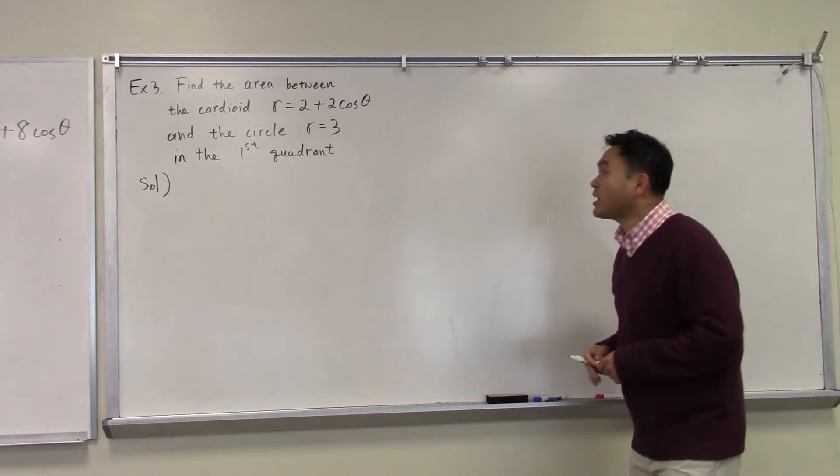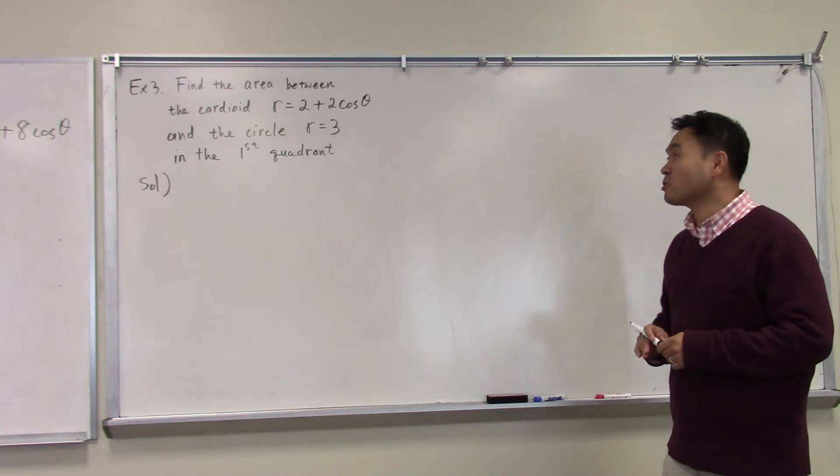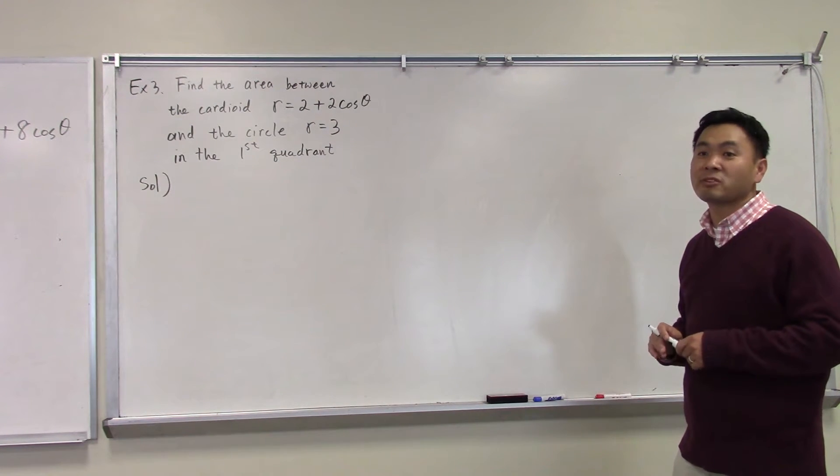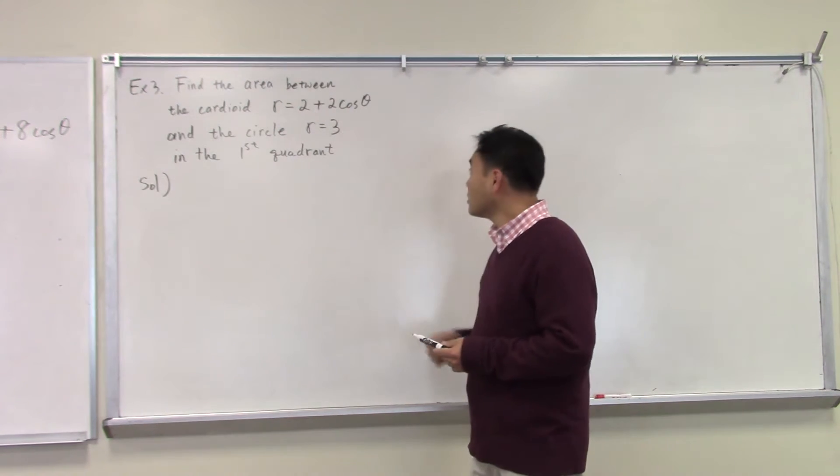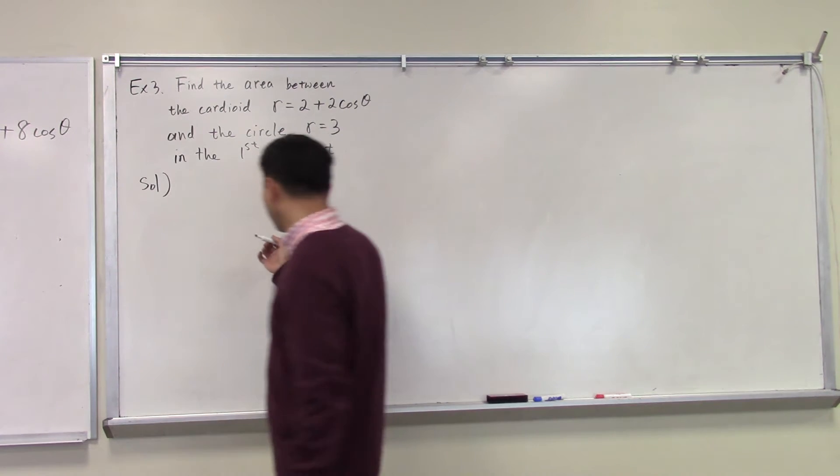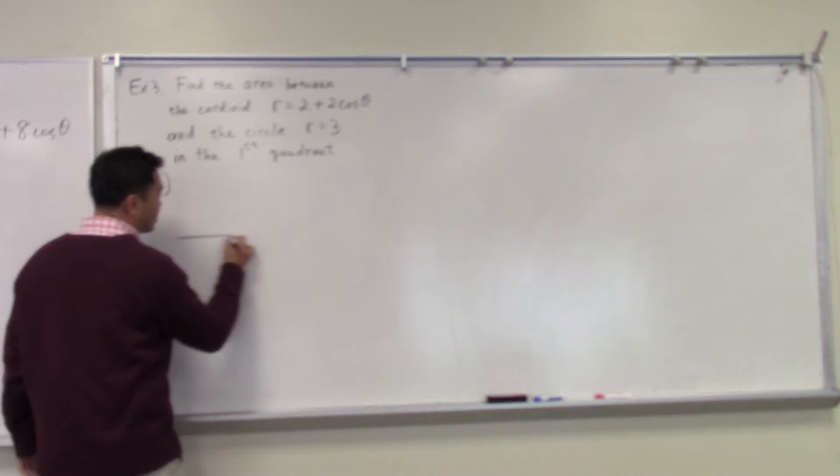This third question is about finding the area between two curves when the two curves are given in polar coordinate equations. First, you want to draw this to see what it means.